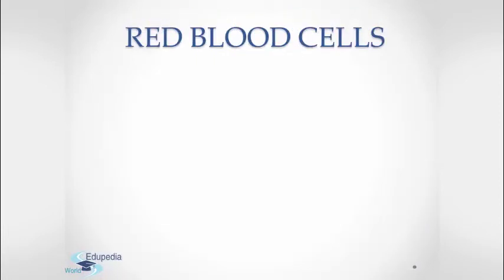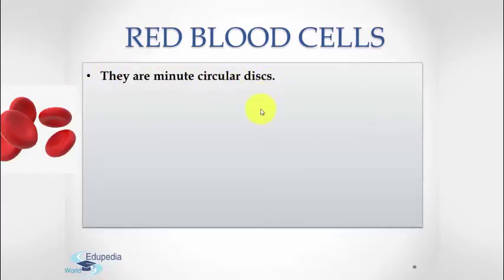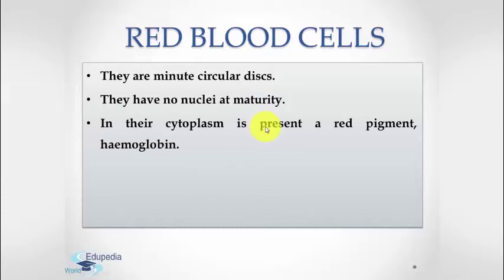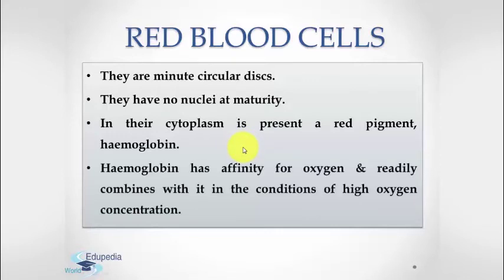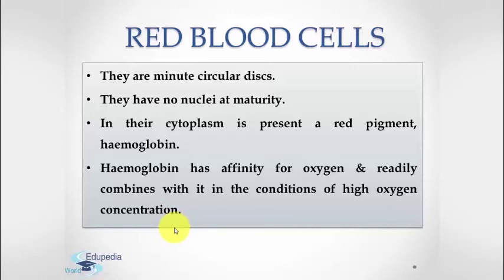We will now discuss about red blood cells. Red blood cells are minute circular discs. They have no nuclei at maturity. In the cytoplasm is present a red pigment known as hemoglobin, which is a protein with iron. Iron is also known as heme. In its molecule, it has an affinity for oxygen and readily combines with it in conditions of high oxygen concentration. It forms an unstable compound called oxyhemoglobin, which in conditions of low oxygen concentration readily breaks down and releases oxygen. This property makes it most efficient in transporting oxygen from the lungs to the tissues having low oxygen concentration. There are about five and a half million RBCs in a cubic millimeter of blood.